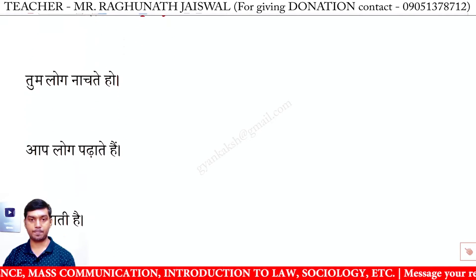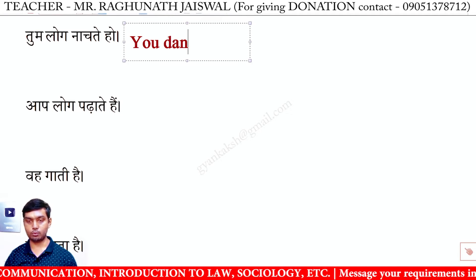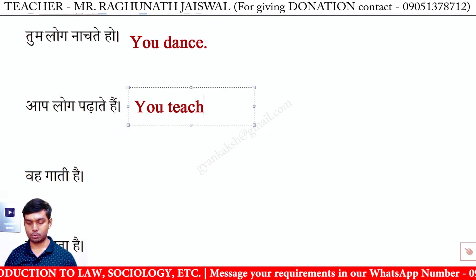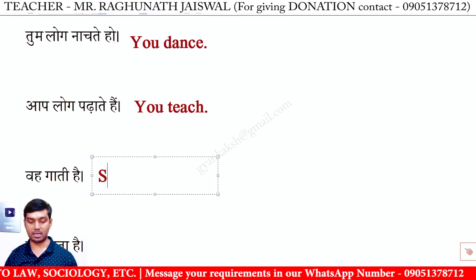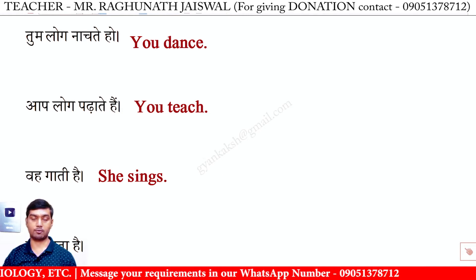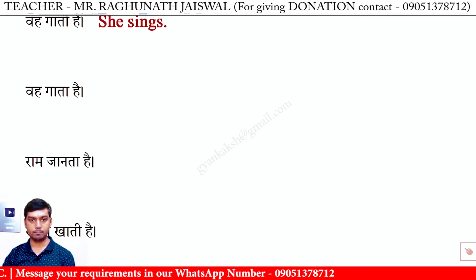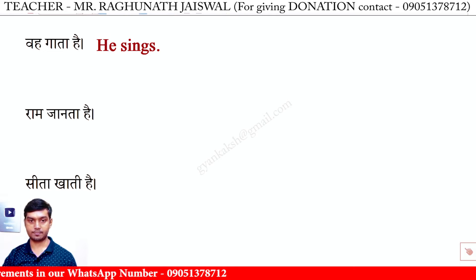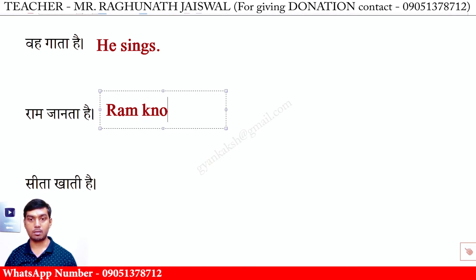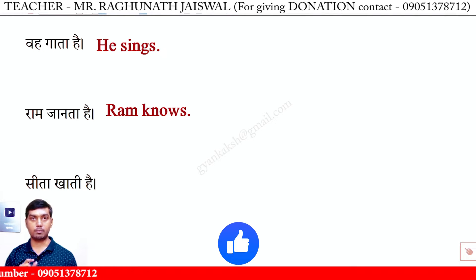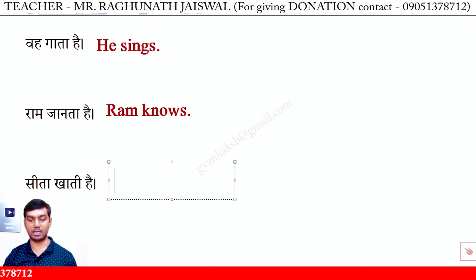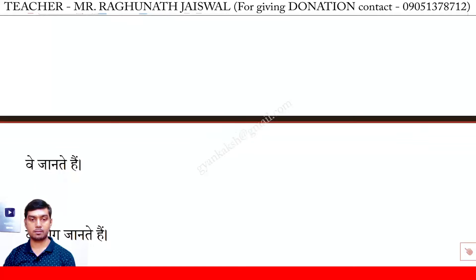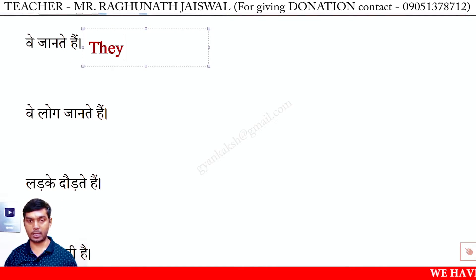आप खेलते हैं — You play. तुम लोग नाचते हो — You dance. आप लोग पढ़ाते हैं — You teach. वह गाती है — She sings (verb के साथ S लग गया). वह गाता है — He sings. राम जानता है — Ram knows, क्योंकि He की जगह Ram का use हुआ है। सीता खाती है — Sita eats.